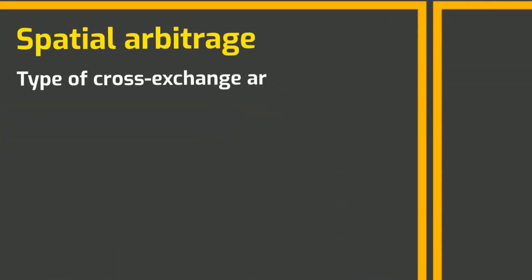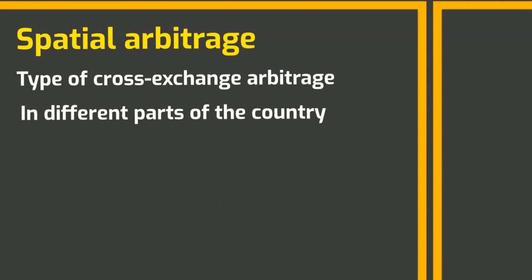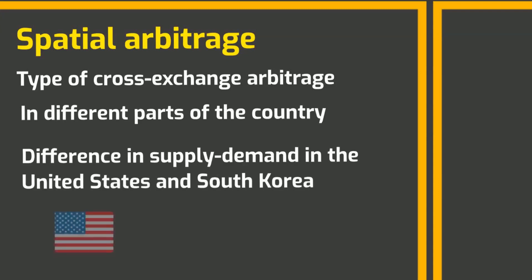Spatial arbitrage is a type of cross-exchange arbitrage trading. The one disparity is that the exchanges are in different parts of the country. Using the spatial arbitrage method, for instance, you might profit from the Bitcoin difference in supply and demand between the United States and South Korea.